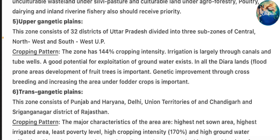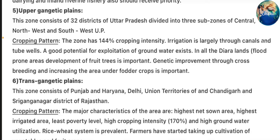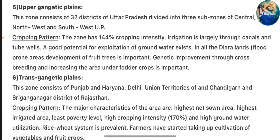Zone 5 – Upper Gangetic Plains: This zone consists of 32 districts of Uttar Pradesh divided into three sub-zones of Central, Northwest, and Southwest U.P. Cropping pattern: this zone has 144% cropping intensity. Irrigation is largely through canals and tube wells, and a good potential for exploitation of groundwater exists. In dairy lands and flood-prone areas, development of fruit trees is important. Genetic improvement through cross-breeding and increasing the area under fodder crops is also important.